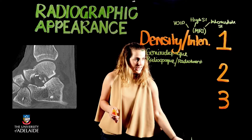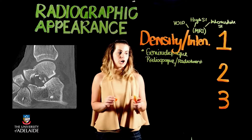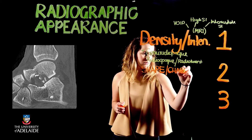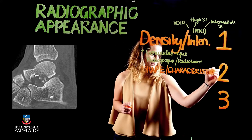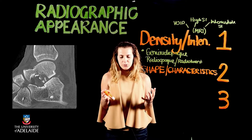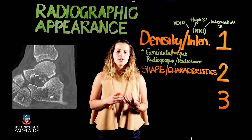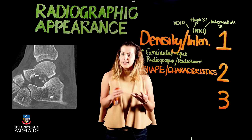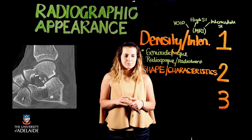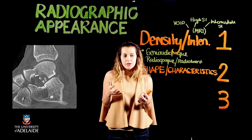The second thing we're going to talk about is the shape or characteristics of a structure. When describing shape, think about explaining it to a ten-year-old — use simple terminology such as linear, oblique or diagonal, horizontal, circular, semicircular, or irregular to describe the basic shape of what something looks like.